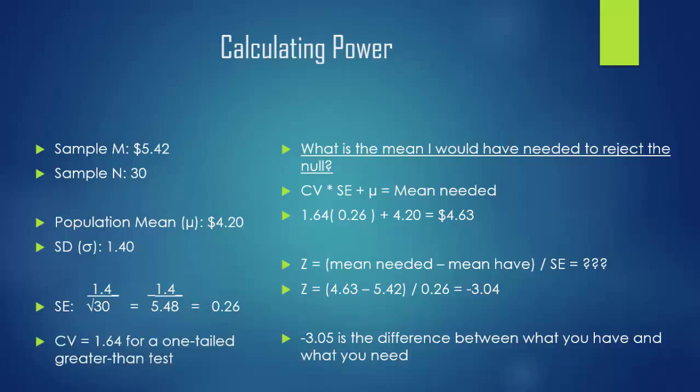You may notice that the critical value is a little different this time. Instead of running a two-tailed test, I'm running a one-tailed, greater than test, because it's a little bit simpler to do a one-tailed test than a two-tailed when calculating statistical power. The critical value for a one-tailed, greater than test is 1.64. If it were a one-tailed, less than test, it would be a negative 1.64. But since we are wanting it to be greater than the other, it's going to be positive.